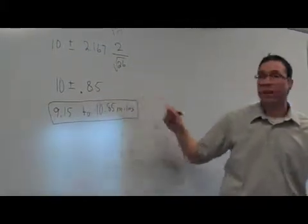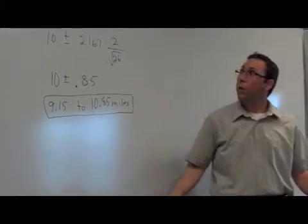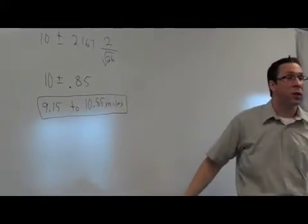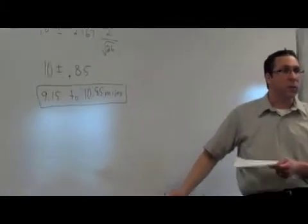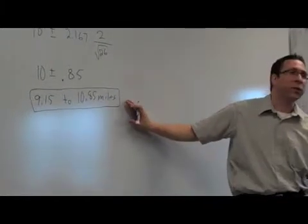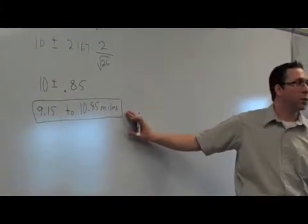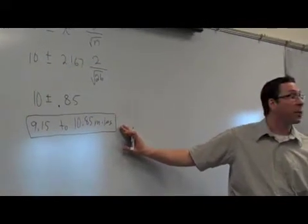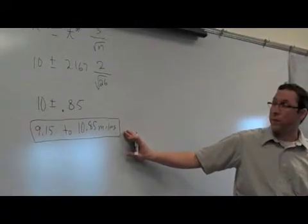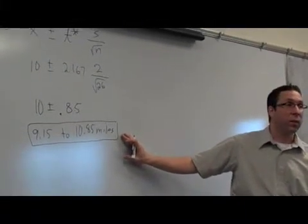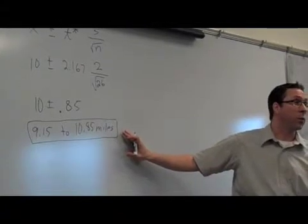And you can close it off by saying a sentence like: We are 96 percent sure that this confidence interval method produced a good enough solution, so the true average is likely between 9.15 and 10.85 miles for all people who work in Amherst.